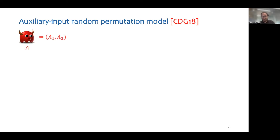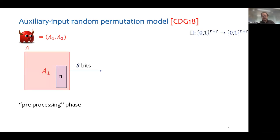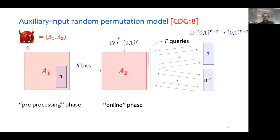Here is how the collision resistance game is defined in this model. The adversary A consists of two stages, A1 and A2. The first stage, A1, is unbounded and has complete access to the permutation pi. It computes S bits of preprocessing, which is input to the online phase, along with the random IV. The online phase can make T queries to the permutation and its inverse.